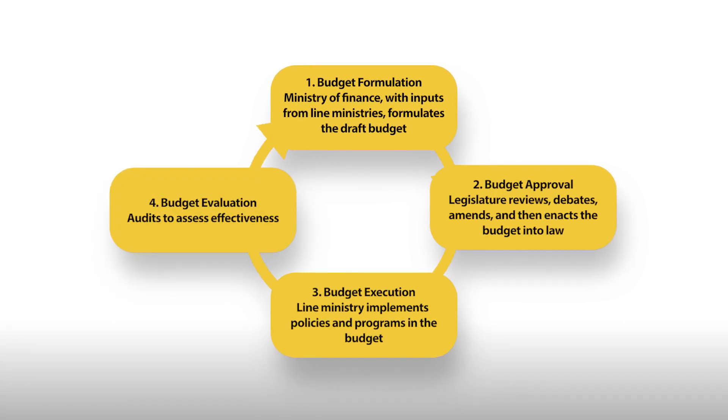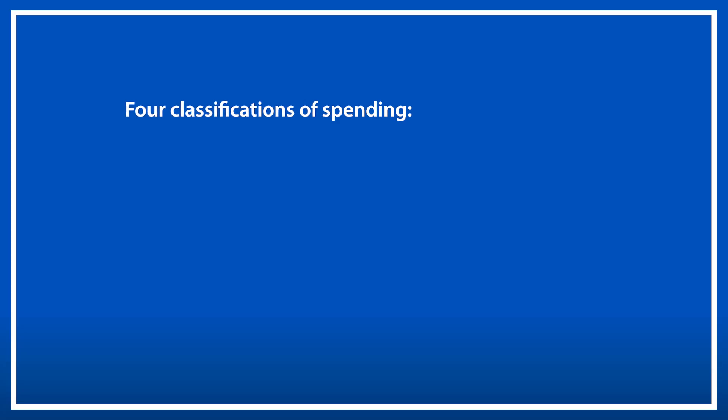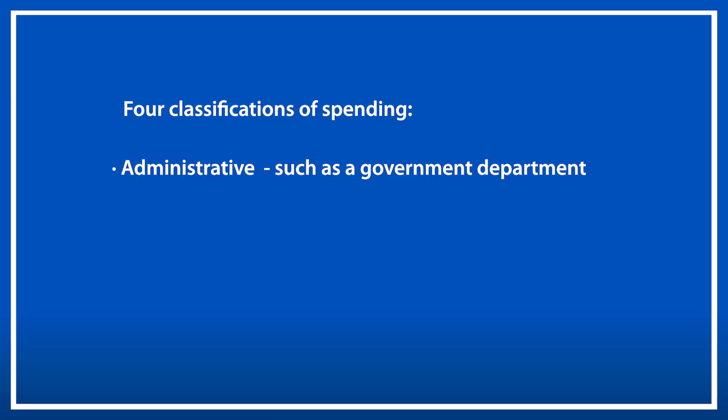Lastly, the budget is evaluated through an audit to ensure its effectiveness. How are these national budgets then allocated? This can vary by country. GPE provides an overview of different classifications of spending. For example, a country might divide regular spending from development, investment, or capital spending. Or it might be allocated in terms of four classifications. First, administrative, such as a government department.